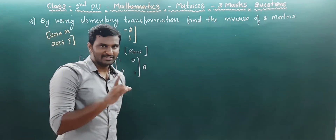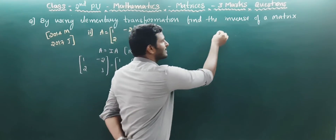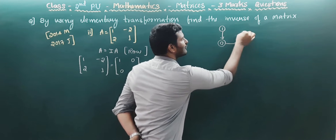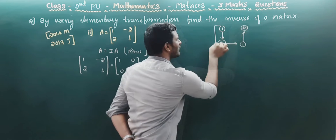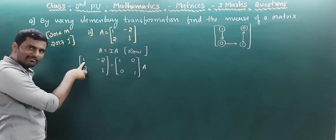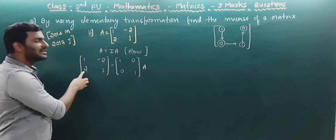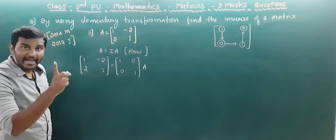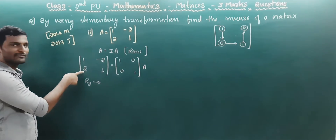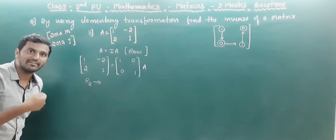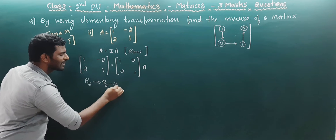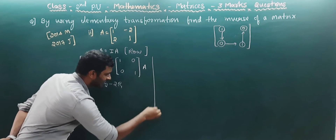As I told you in the previous video, there is a pattern. We need to make the first number 1, second number 0, third number 1, and fourth number 0. The first and third numbers are already 1, so we move to make the second element 0. We apply R2 implies R2 minus 2 times of R1.